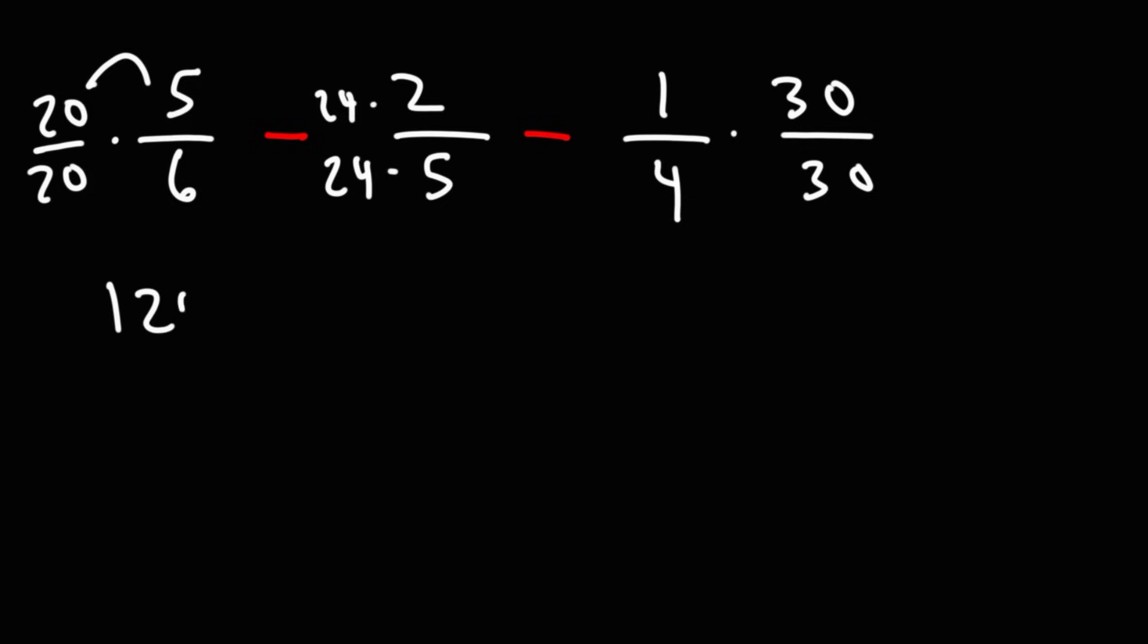20 times 5 is 120. 20 times 6 is... Wait, I take that back. 20 times 5 is not 120. If you have 5 $20 bills, that's $100. 6 $20 bills will be 120.